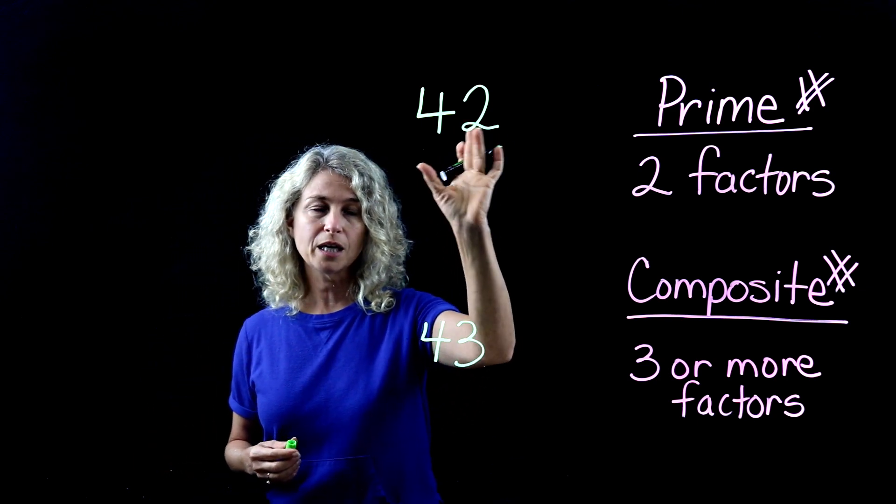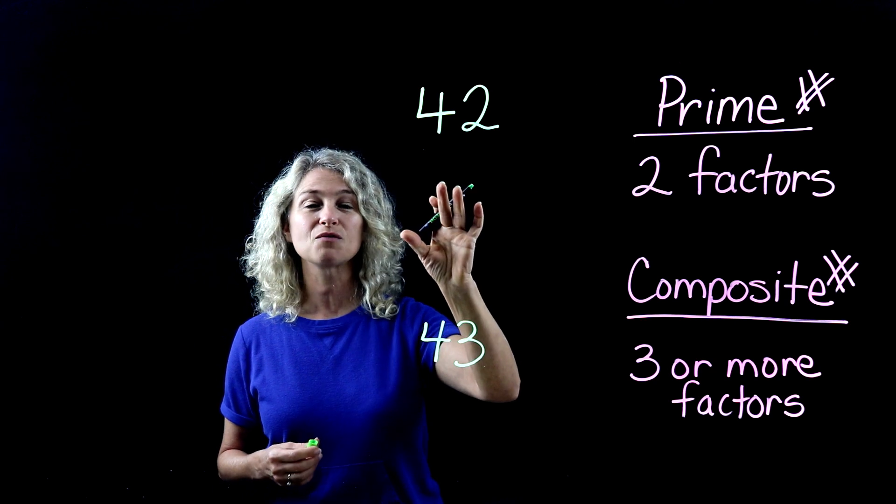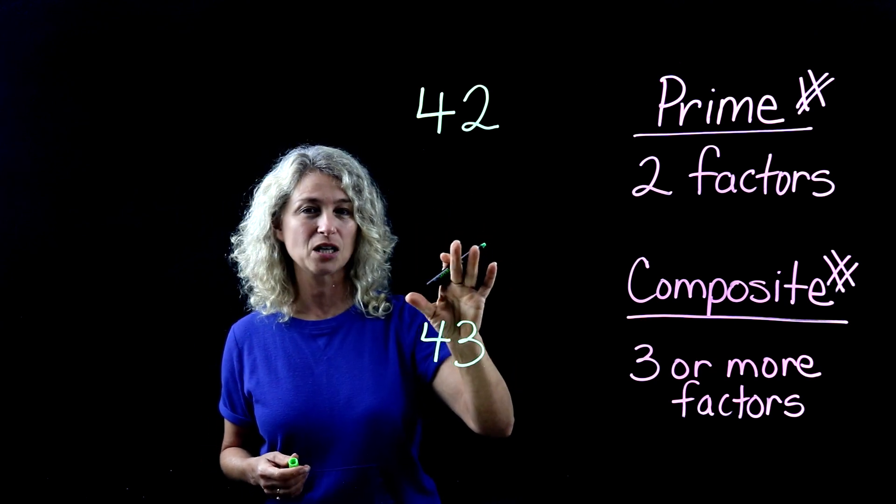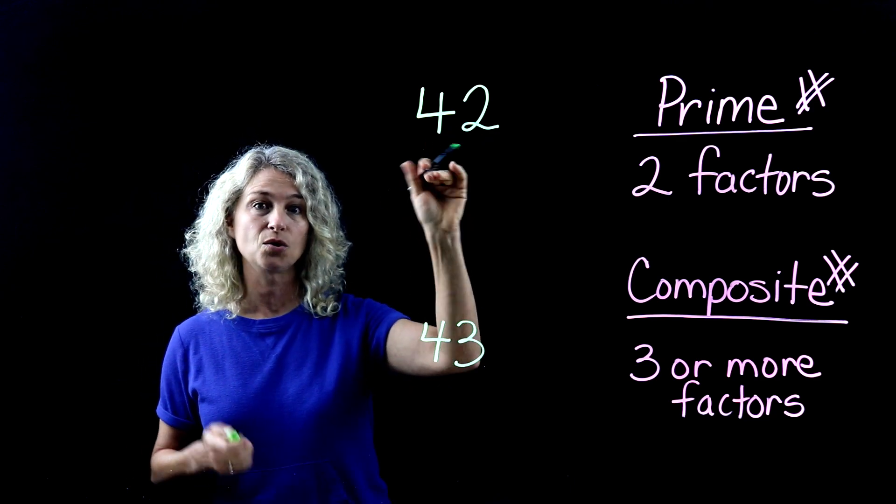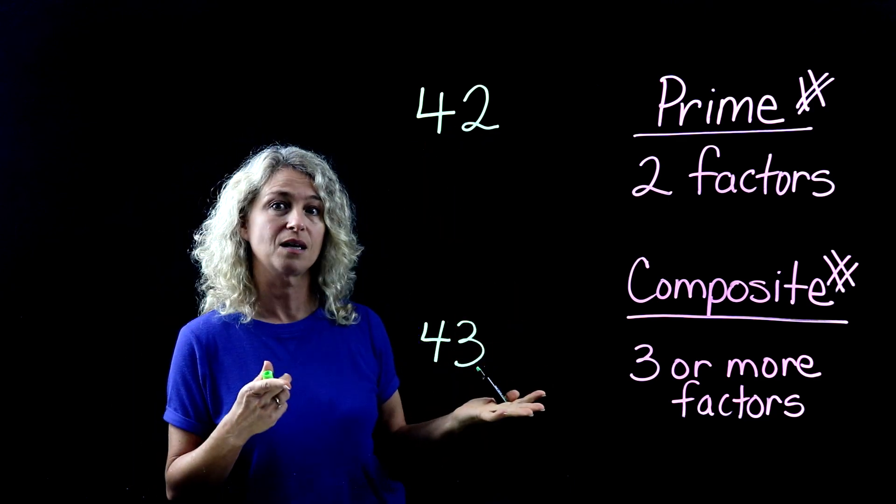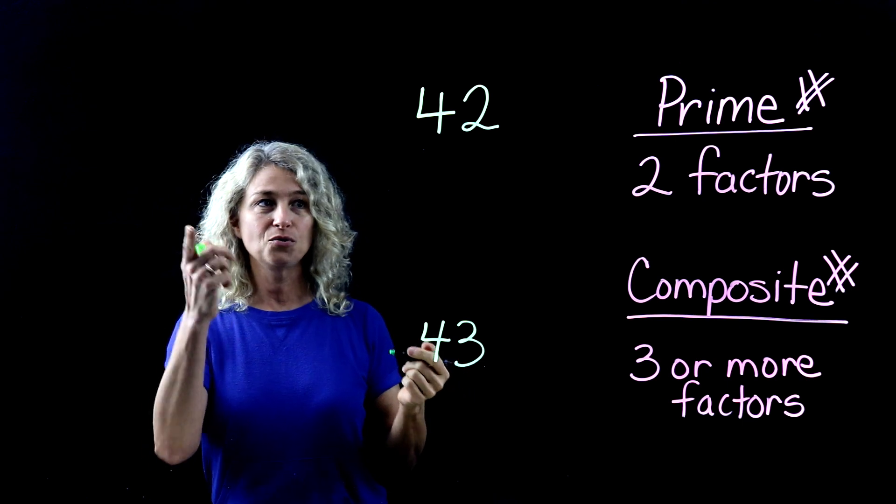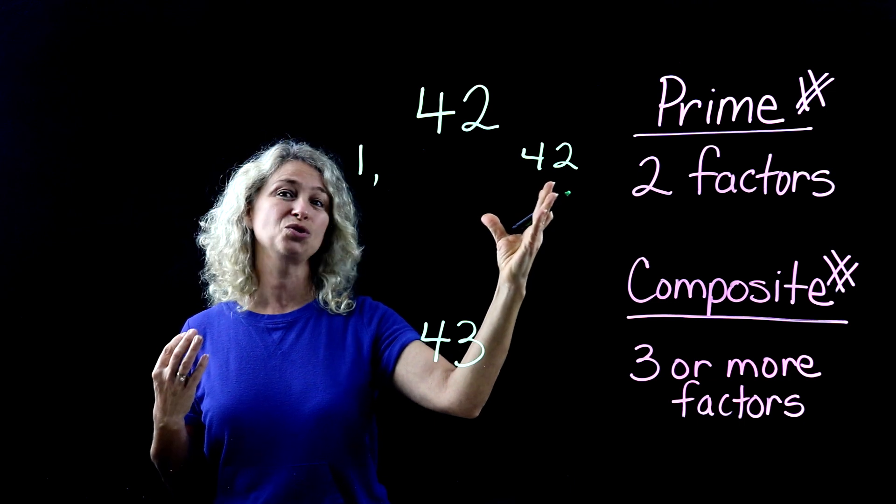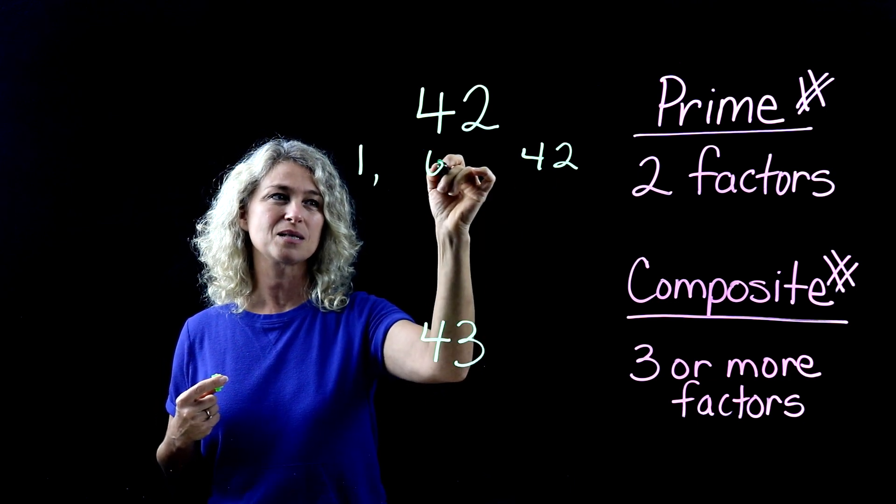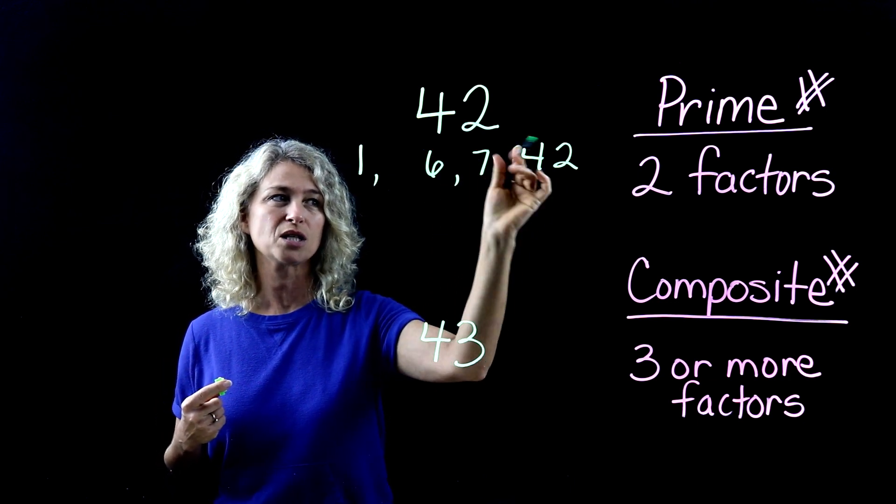So looking at 42, most of you already know your multiplication facts really well. And you know the factors for 42, you're thinking seven times six. And so you know that one times 42 and at least you know that seven times six or six times seven is 42.